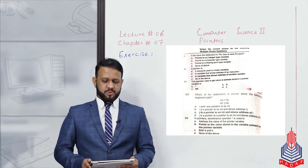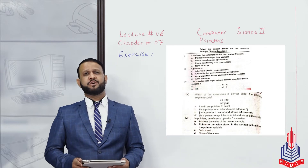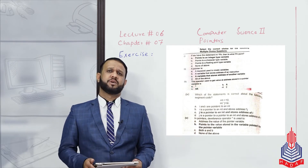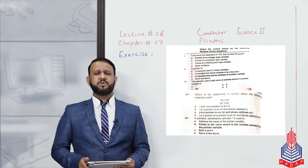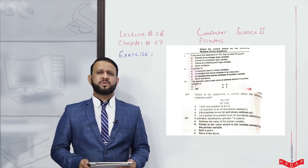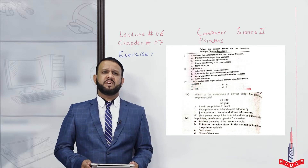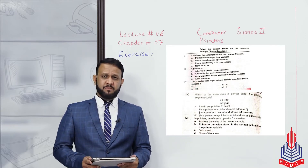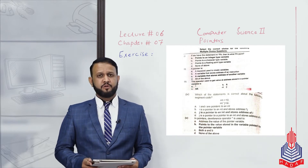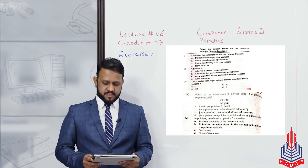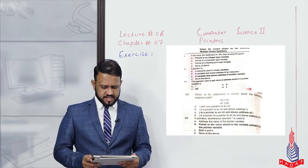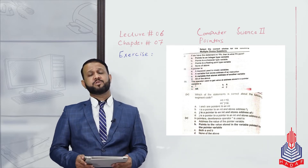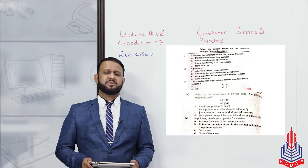Our second MCQ: a pointer is — four choices: alpha — a keyword used to create variables (remember, keywords are reserved words with special meanings and cannot be used as variable names in C++); beta — a variable that stores addresses of an instruction; charlie — a variable that stores addresses of another variable; delta — none of these. The correct answer is charlie: a variable which stores addresses of another variable.